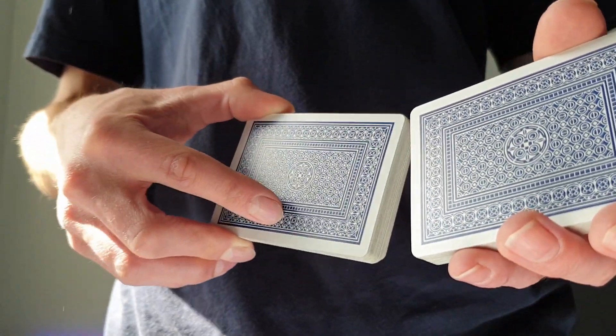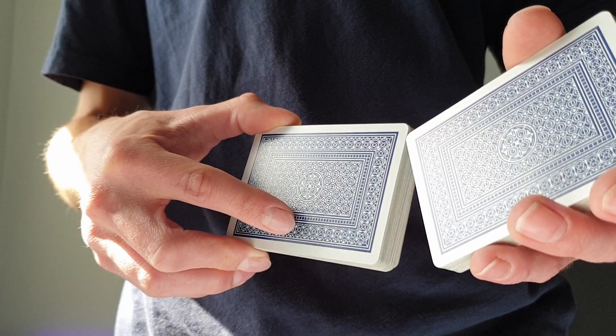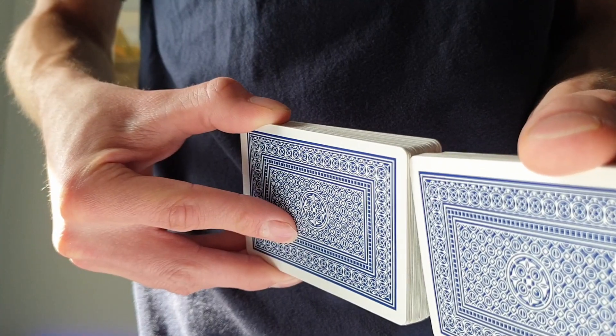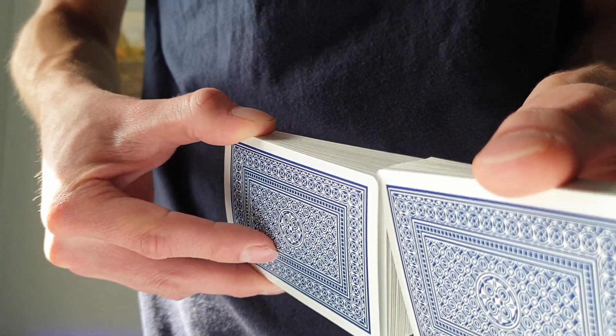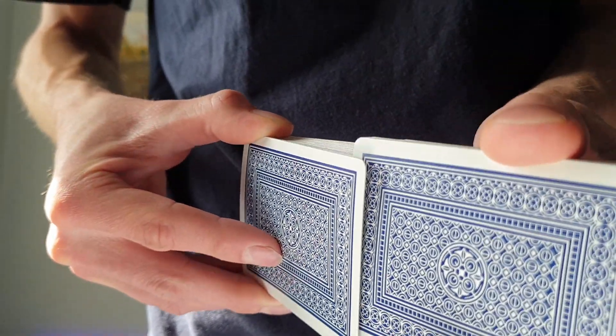Then simply at the left corner we're going to align the right hand packet, almost creating a V. Then by gently rubbing at the left hand side, you'll see that the cards slowly start to weave together.